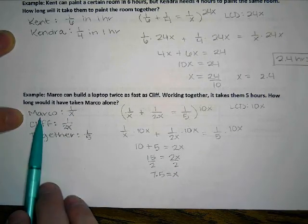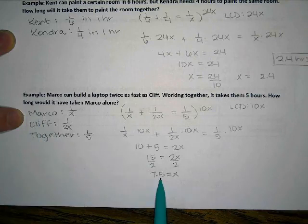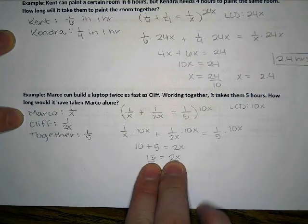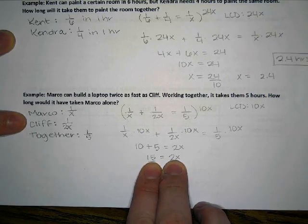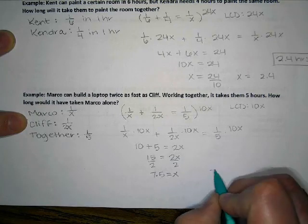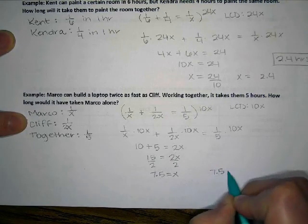So Marco's time for building a laptop would be 7.5 hours. And then if I didn't divide by two, if I just said two X, Cliff's time would have been 15 hours, two X equals 15. So Marco's time is 7.5 hours.